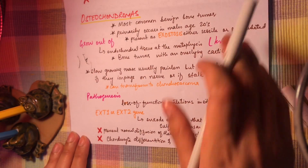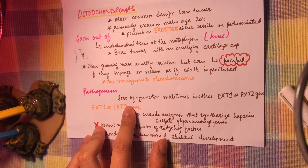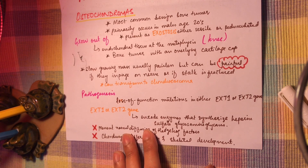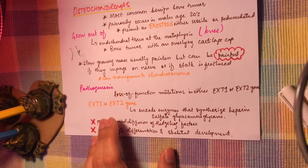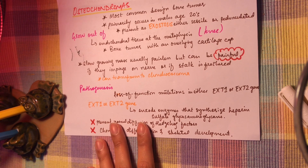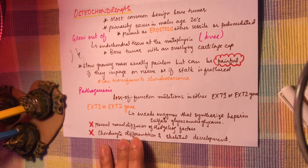The pathogenesis of osteochondroma involves loss-of-function mutations in either the EXT1 or EXT2 gene and loss of the remaining allele in chondrocytes of the bone plate. Reduced expression of EXT1 or EXT2 is observed in the sporadic type as well, occurring in both sporadic and multiple forms. These genes encode enzymes that synthesize heparin sulfate glycosaminoglycans, and reduced or abnormal glycosaminoglycans prevent normal diffusion of hedgehog factors, thereby disrupting chondrocyte differentiation and skeletal development.